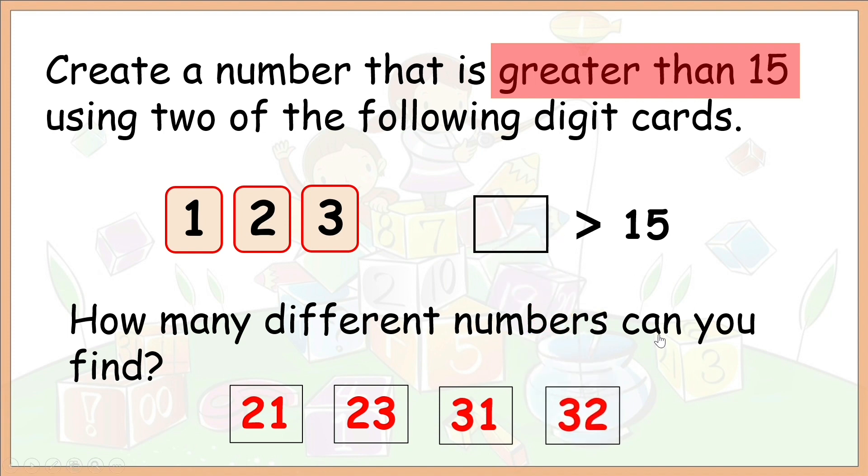Now, children, should we still keep on going? Do we still need to keep counting on? What do you think? You're right. 32 is the last possible answer because it's the biggest number we could create using these digit cards. So, we have to stop there. And there you have the answers, children. All these numbers, 21, 23, 31, and 32, are greater than 15. Do you have the same answers as mine?